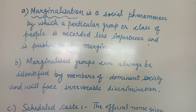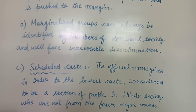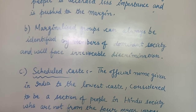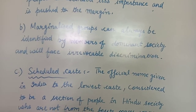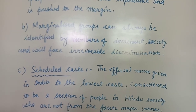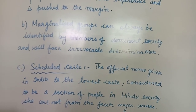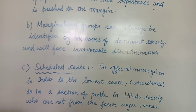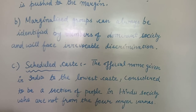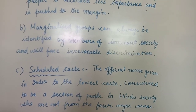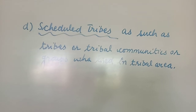Term C, Scheduled Castes: the official name given in India to the lowest caste — the Dalits. Scheduled Castes are considered to be a section of people in Hindu society who are not from the four major varnas — Brahmin, Kshatriya, Vaishya, and Shudra. Term D, Scheduled Tribes: Scheduled Tribes are such tribes or tribal communities or groups who lived in tribal areas.